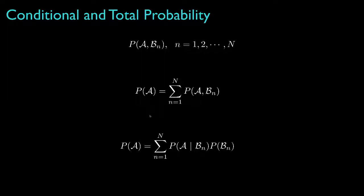Using the concept of conditional probability, we can rewrite each joint probability as the product of a conditional probability and the probability of the conditioning event. Because many problems are posed by specifying these conditional probabilities, this is an important way to compute total probability from conditional probabilities.